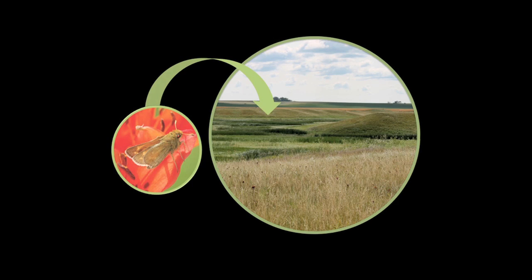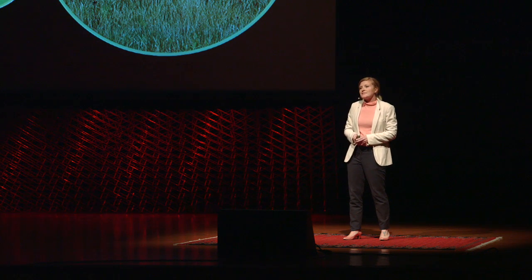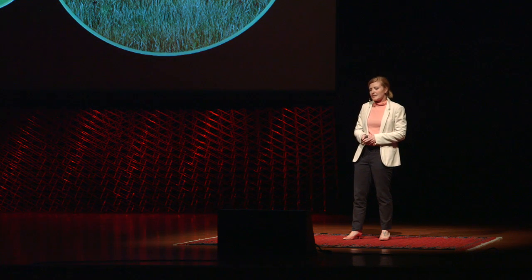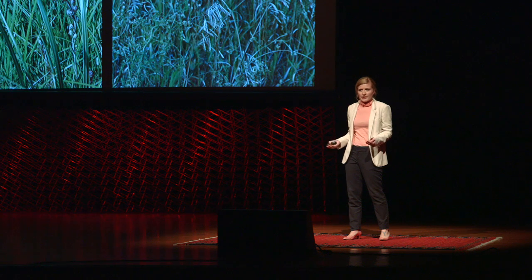So by itself, the Dakota skipper might not seem important, but let's put it back into the context of its system. Let's look at its interactions on a broad scale. Let's look at why it's disappearing. So one of the limiting factors for the Dakota skipper is that it needs high-quality prairie to survive. So what's pictured on the right, it needs a diverse mixture of native grasses and wildflowers.